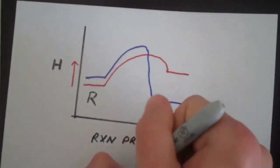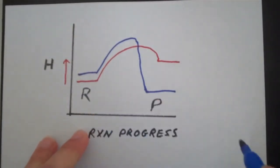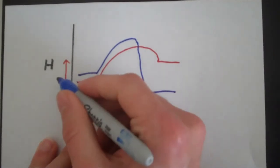If you look at the exothermic process, the energy of the products is lower than the energy of the reactants. So you're climbing down.